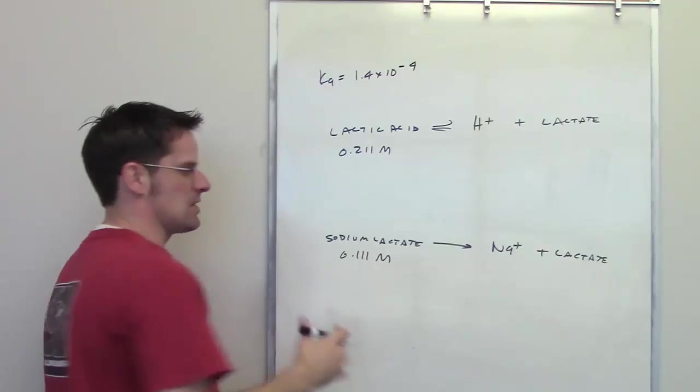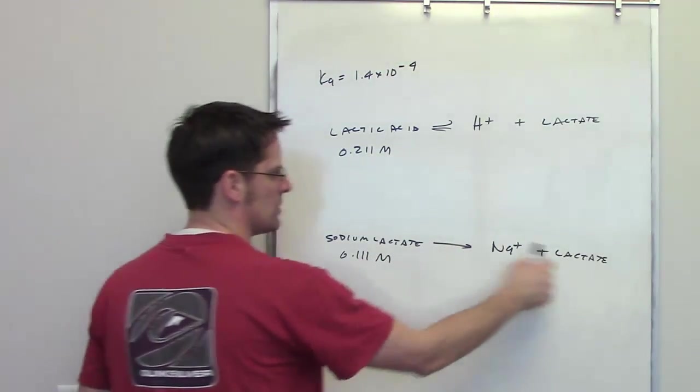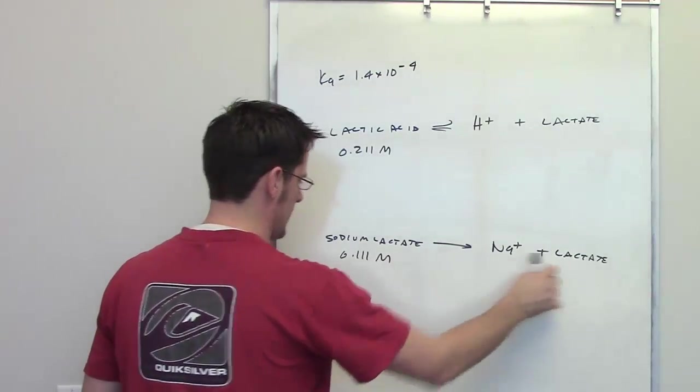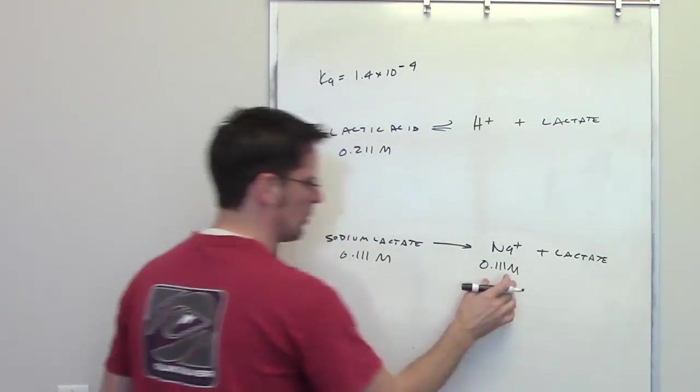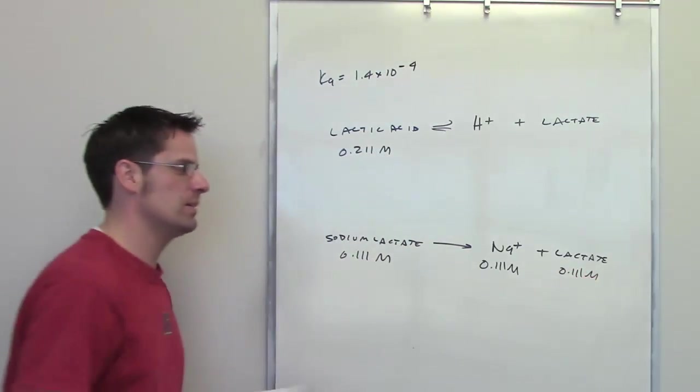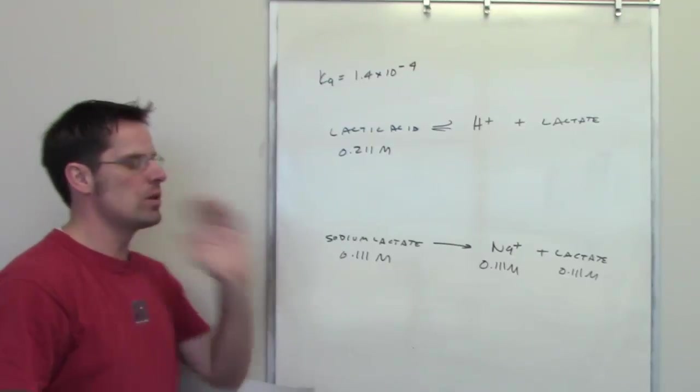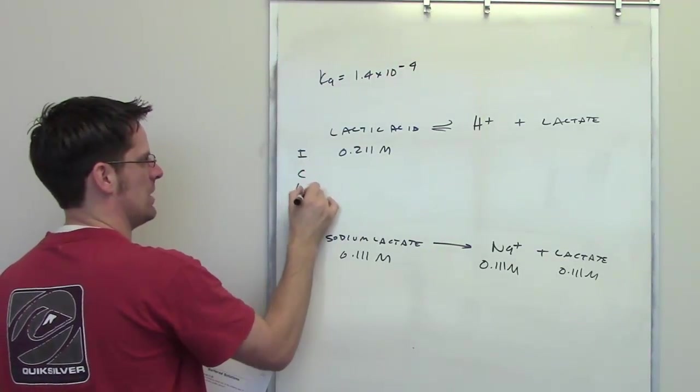Because sodium lactate is a strong electrolyte, dissolves very nicely in water, and it's present in a one-to-one-to-one ratio of sodium lactate and sodium to lactate, I'm going to get out 0.111 molar equivalence of sodium and 0.111 molar equivalence of lactate. Now, in order to determine the pH of this, I have to make an ice table. So I'll go ahead and write that out here.